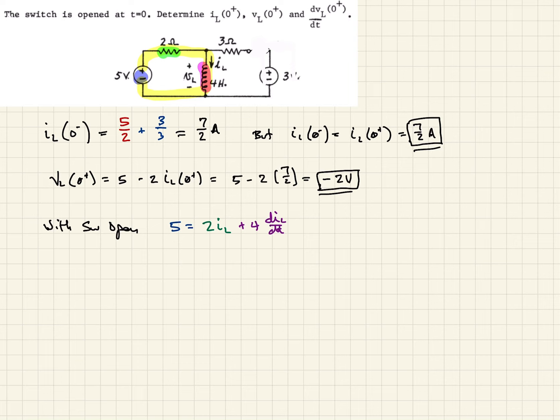And so now we can differentiate this. So differentiating, a constant is going to go to 0, right? And so then we'll have 2 times DIL over DT. And then we'll have plus, this term will then become the voltage, DVL over DT.